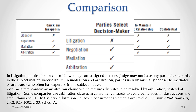Now, some companies use arbitration clauses in consumer contracts to avoid being sued in class actions and also to avoid being sued in small claims court. However, even if a consumer contract has an arbitration clause like that, in certain provinces including Ontario, arbitration clauses in consumer agreements are invalid. So even with such a clause, if you have a contract as a consumer, you always have a right to sue in court — either small claims court or superior court — and also including a class action.